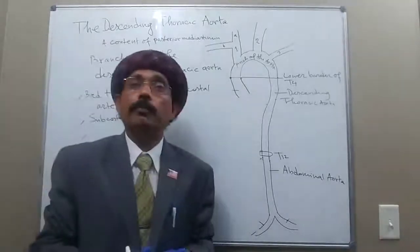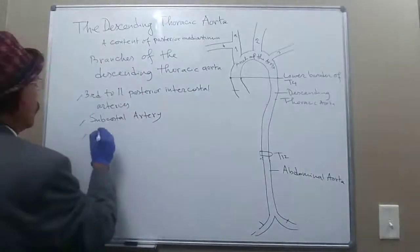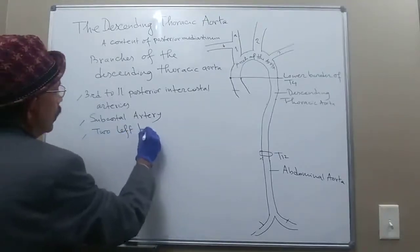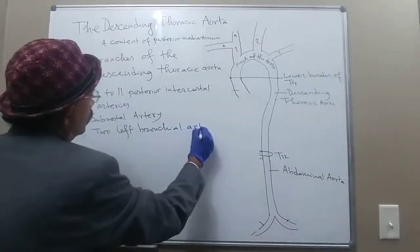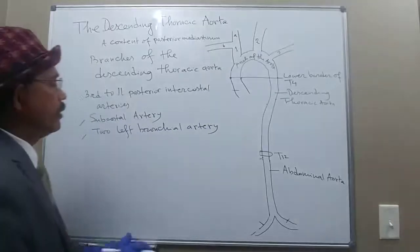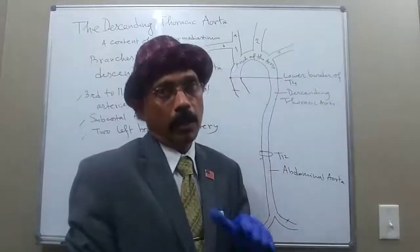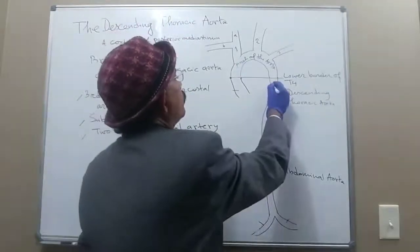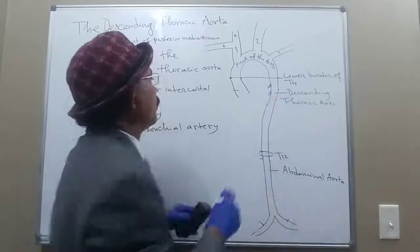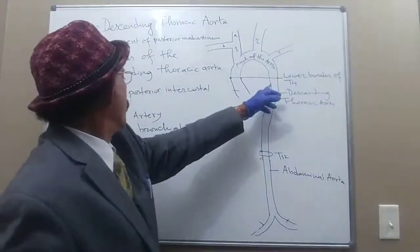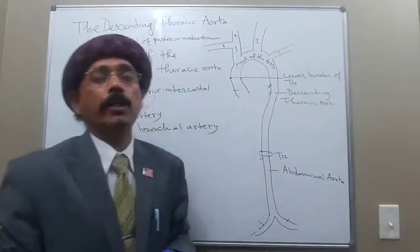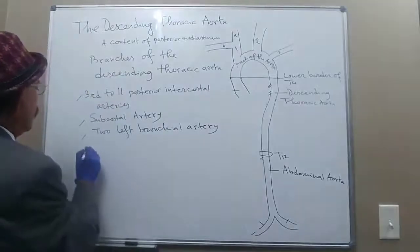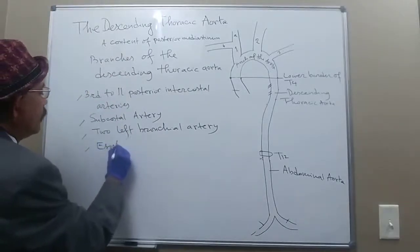Because it is a content of the posterior mediastinum, it should supply the bronchus. So we have two left bronchial arteries. Usually, the right bronchial artery comes from the upper left bronchial artery. The upper left bronchial artery is close to the arch. The right bronchial artery may also come from the right third posterior intercostal artery.